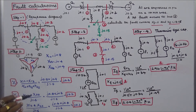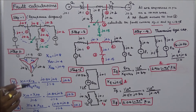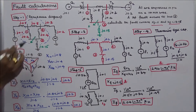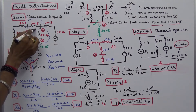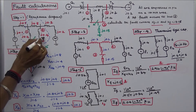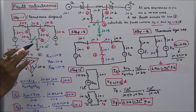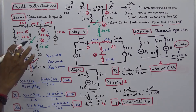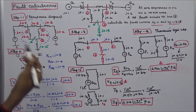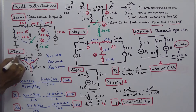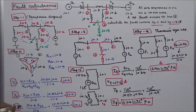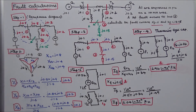We have to calculate the total reactance between the fault point and the neutral point. The impedances J.8, J.4, and J.4 are connected in delta. So we convert delta to star — that is Step 2. X12 is equal to J.8, X13 is equal to J.4, and X23 is equal to J.4.